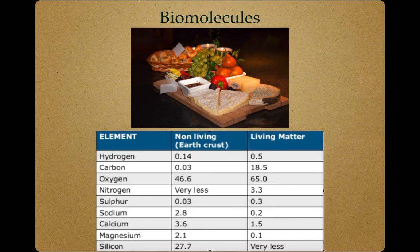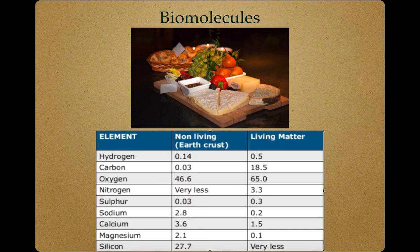Biomolecules are chemicals or molecules that are present in living organisms. Generally speaking, biomolecules are compounds of carbon, and based from the table, carbon constitutes the second largest percentage in living matter. It is considered to be the most versatile and the most predominant element of life. Cellular pool is the sum total of the different types of biomolecules, compounds, and ions present in a cell.